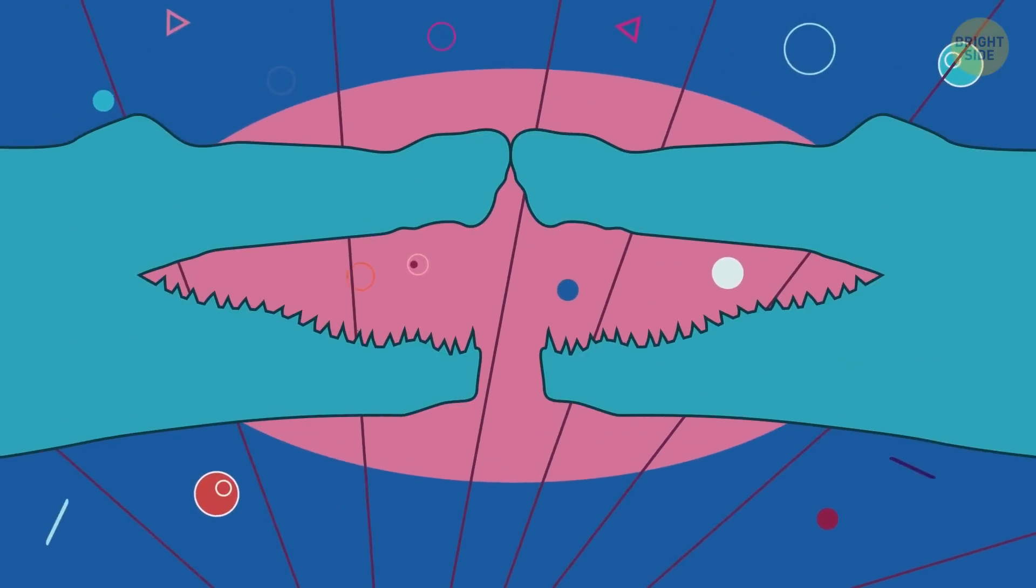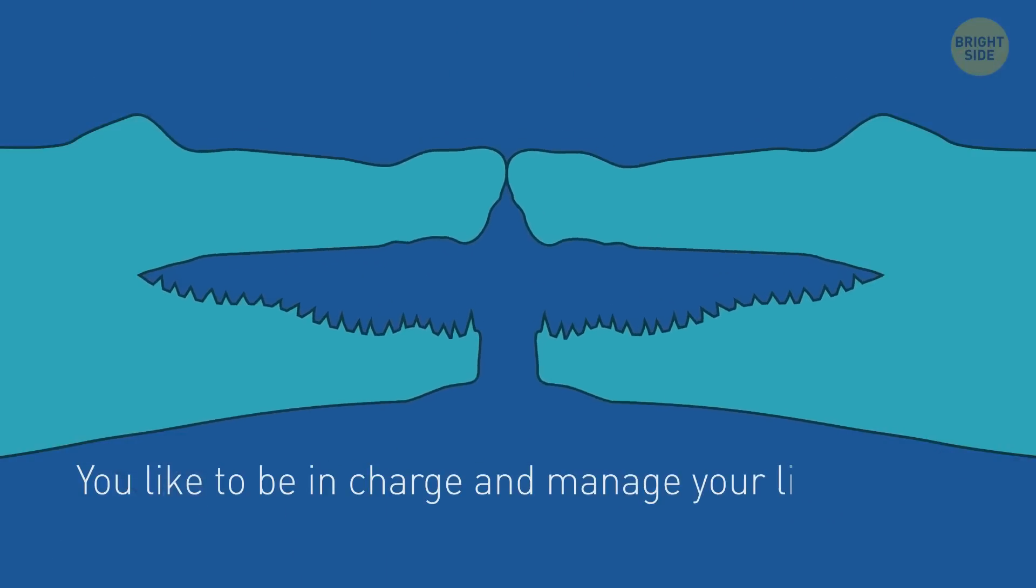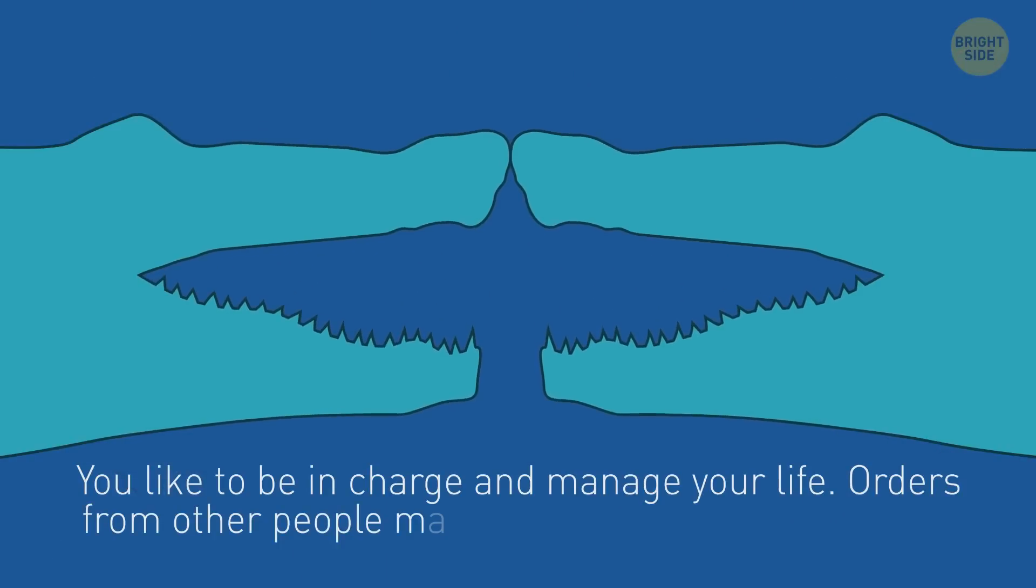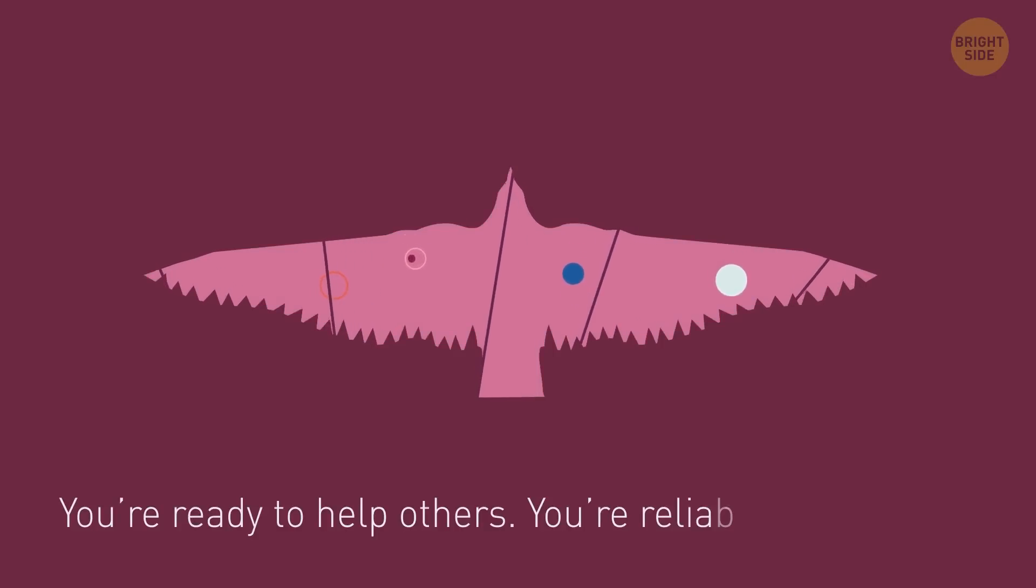And here we have crocodiles. Ooh. Then maybe you like to be in charge and manage your life. Orders from other people make you suffer because you're a natural leader. If you see a bird in the middle, you're ready to help others. You're reliable and friendly.